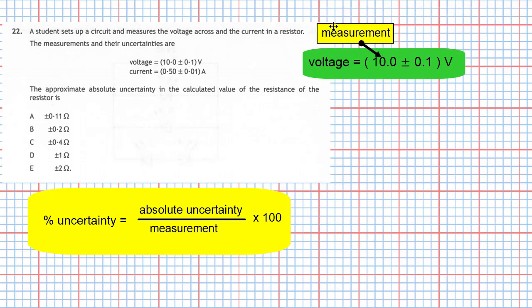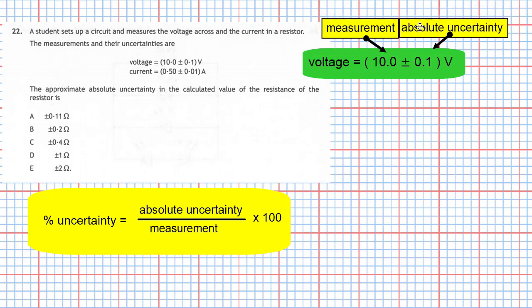The absolute uncertainty is the plus or minus 0.1 volt part. So right away we can calculate the percentage uncertainty in the voltage — I'll write percentage V for the voltage — and that's going to equal the absolute uncertainty divided by the measurement.